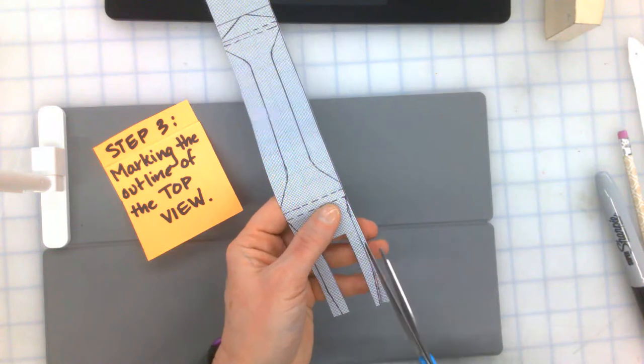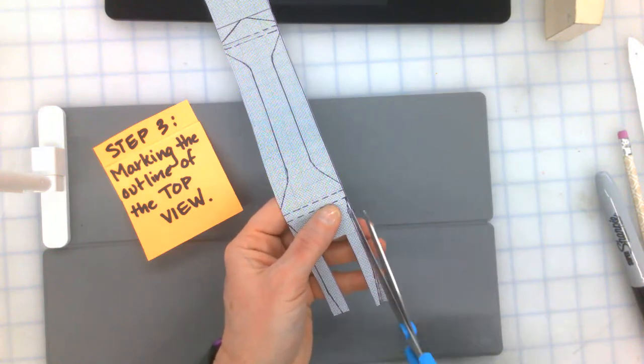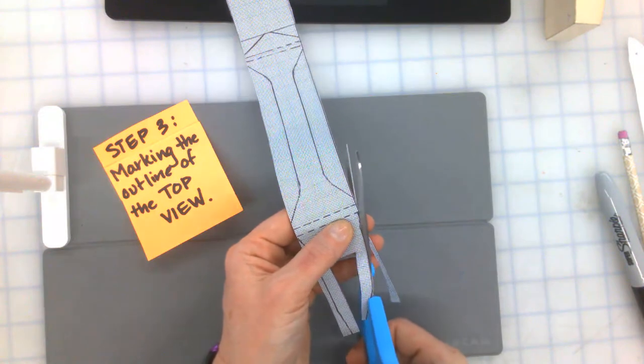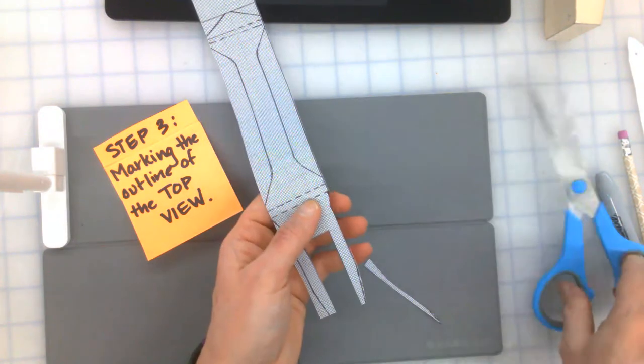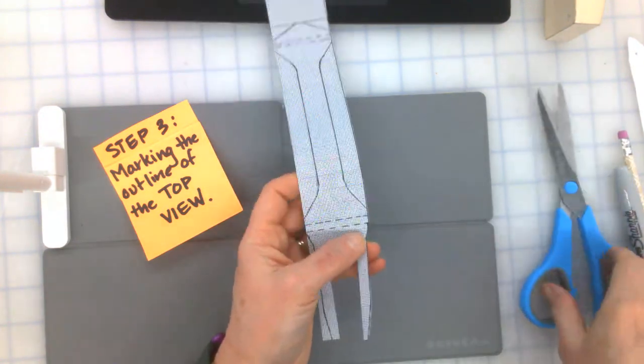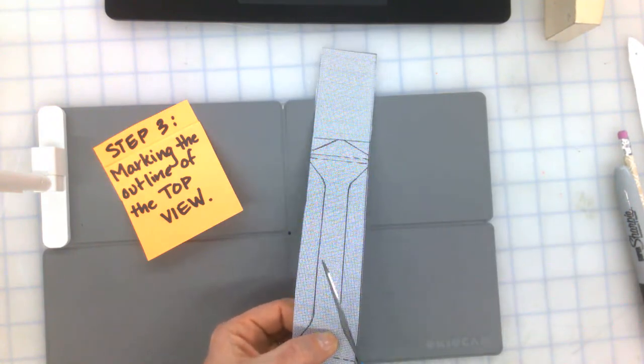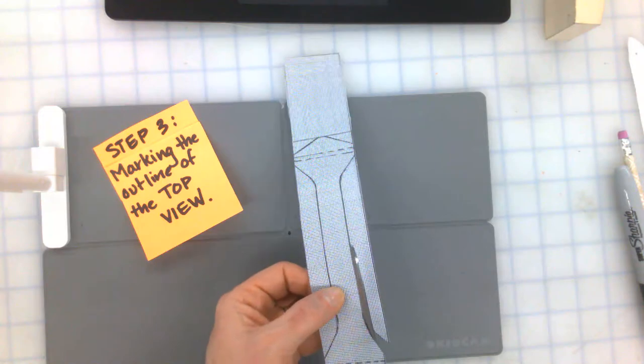And I might actually just use the sanders instead of the saw to cut this off, to remove that material, and then save the saws for when I need to remove a lot of material, like in this area here.